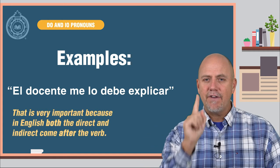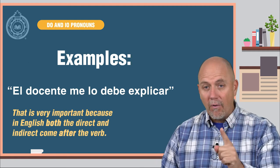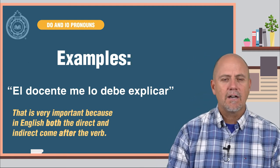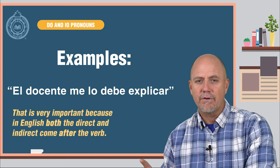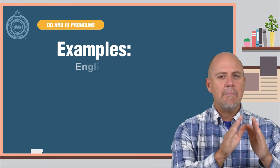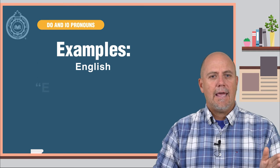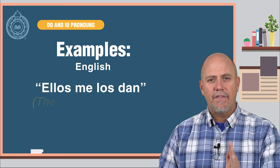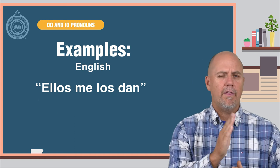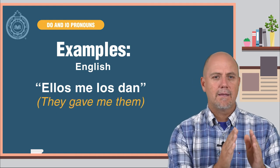That is very important because in English, both the direct and indirect objects come after the verb. Let's look at those same examples, but in English. "Ellos me los dan" — "They give them to me," or "They give me them."